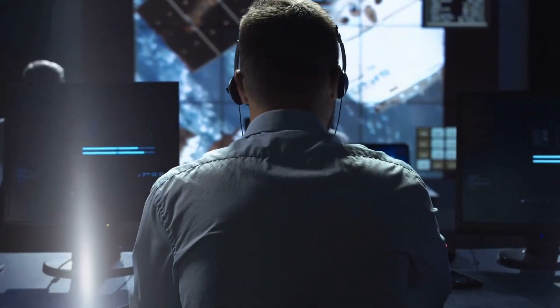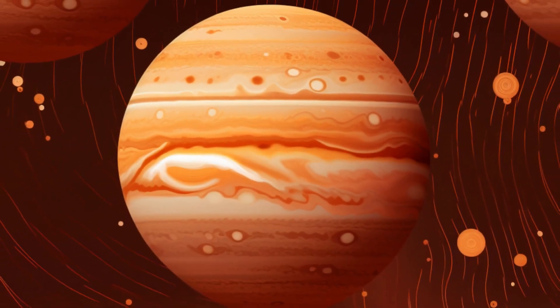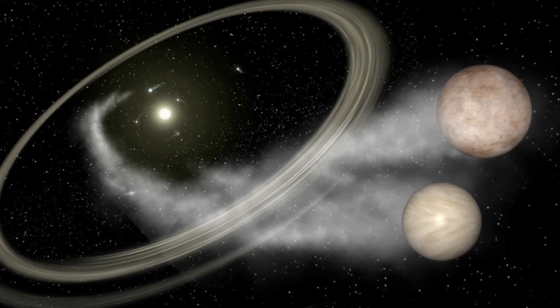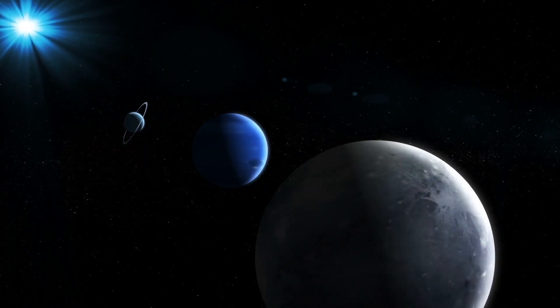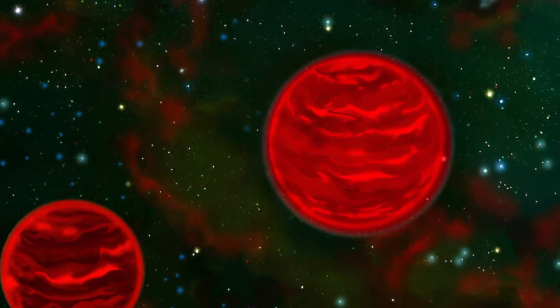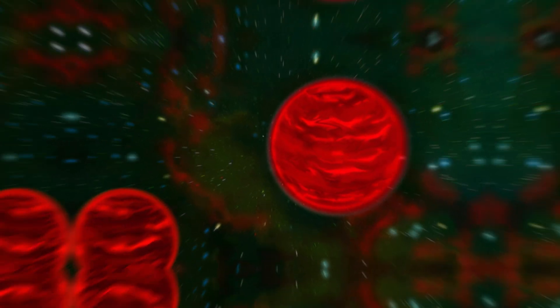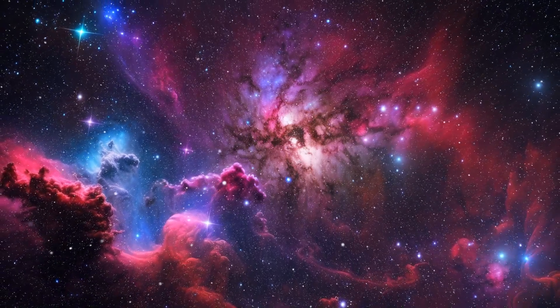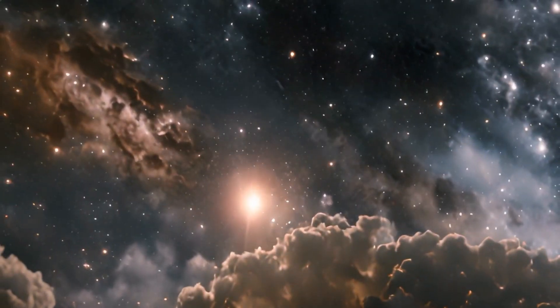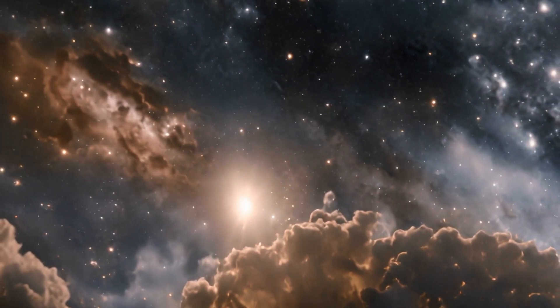Scientists call them Jupiter-mass binary objects, or simply jumbos. Now, let that sink in for a moment. We're talking about 40 pairs of massive planets, all dancing in sync in the vastness of space. It's not just improbable, it's downright mind-blowing. It's like the universe is sending us a message, urging us to peek behind the curtain and unravel its mysteries.